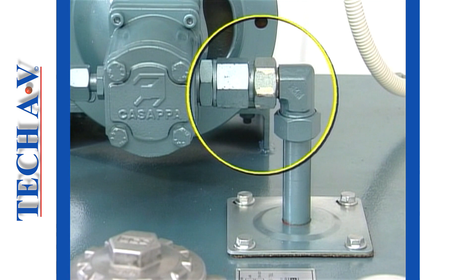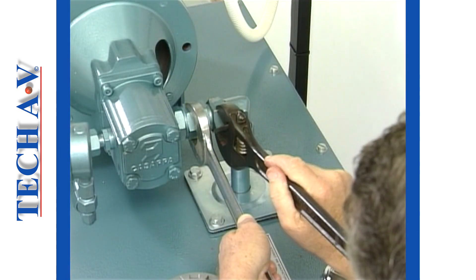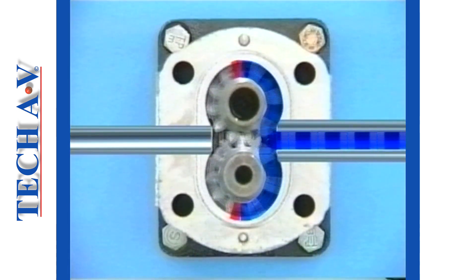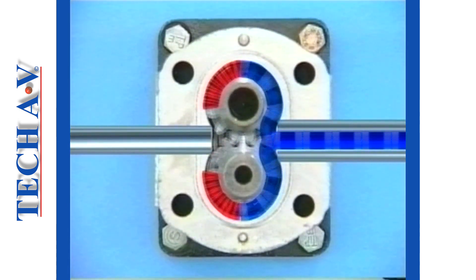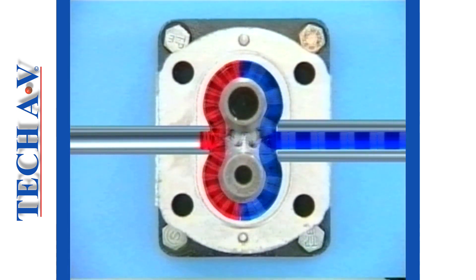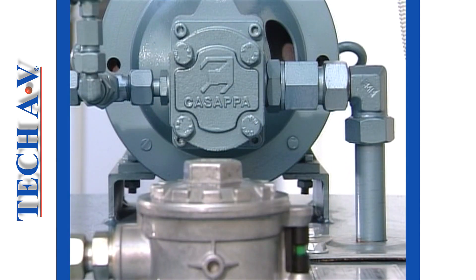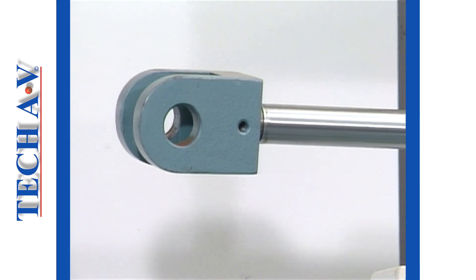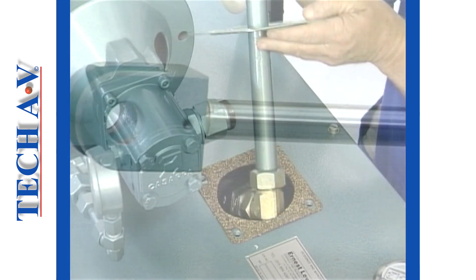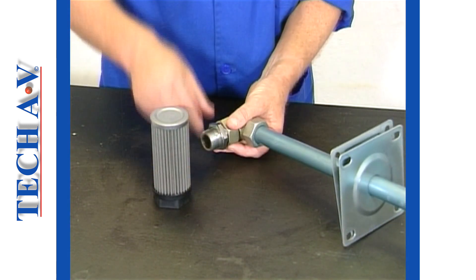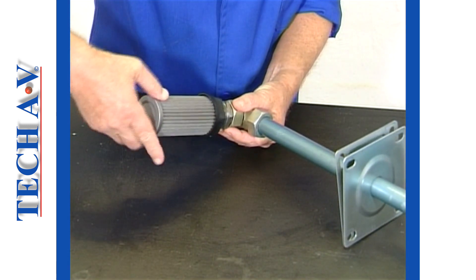Next, check and, if necessary, secure any loose connection on the pump suction line. A loose connection at any one of these connections is a common cause of pump and delivery related problems. If the problem on your system involves a noisy pump and a lack of power and speed in the actuators, then you should inspect the suction strainer and clean or replace it as described in Module 2 of this series.